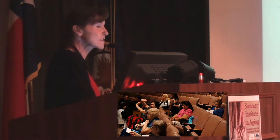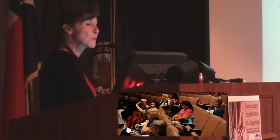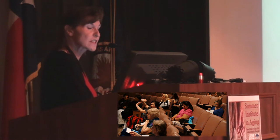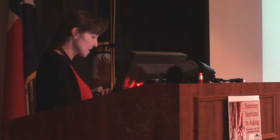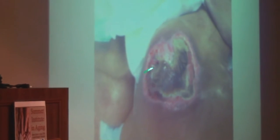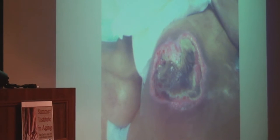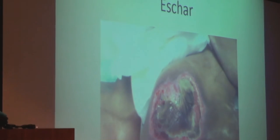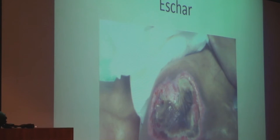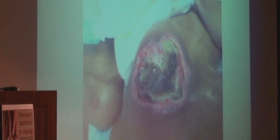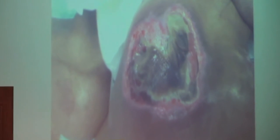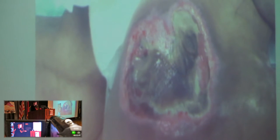Necrotic tissue is sometimes referred to as eschar, slough, or desiccated tissue. Eschar is a very thick, adherent, leathery tissue seen centrally in severely injured wounds representing significant tissue damage. You typically see eschar when a wound has been allowed to dry out — that top layer of tissue desiccates and ends up looking like a slough of tissue.